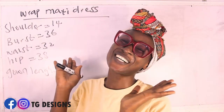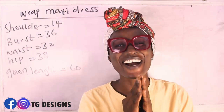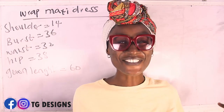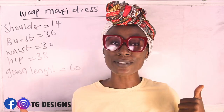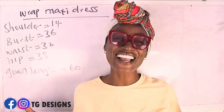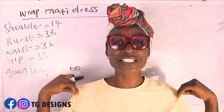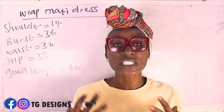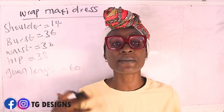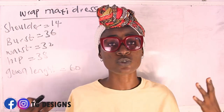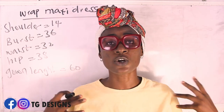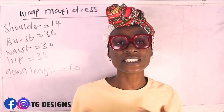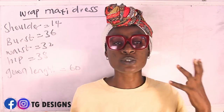Welcome to my channel! Don't forget to give this video a thumbs up, like, share, and subscribe. In this tutorial we are going to make a simple wrap maxi dress. You can basically use any fabric of your choice — African prints, ankara, cotton, lace, chiffon — it all depends on you. This is one style that is very unique and great especially for plus size.